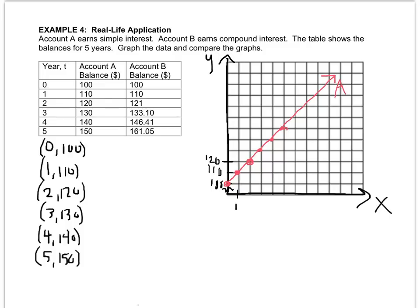When I go to graph account B, it's the point 0, 100, 1, 110, 2, 121, 133, 133.10, etc.